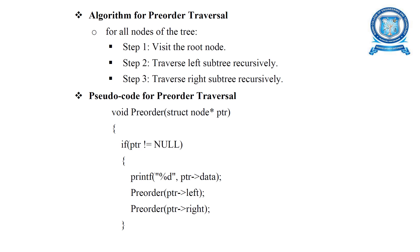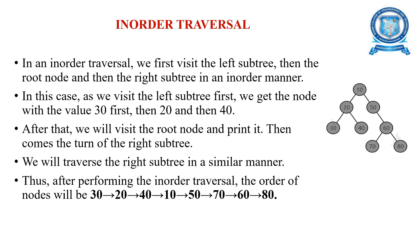The algorithm for pre-order traversal is: visit the root node, traverse the left sub-tree recursively, then traverse the right sub-tree recursively. The pseudo code checks if the pointer is null, then accesses data, left, and right. This is the pseudo code for pre-order traversal.